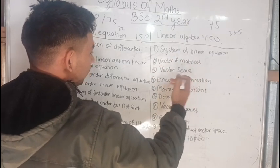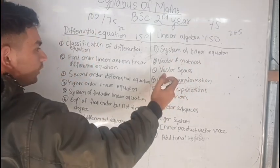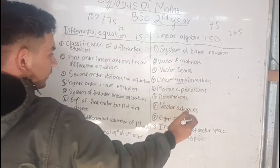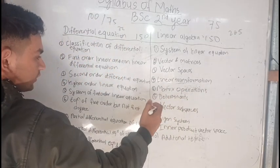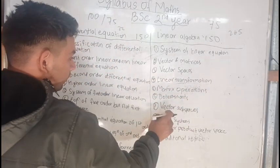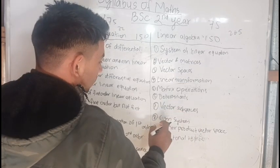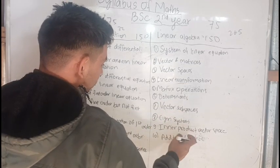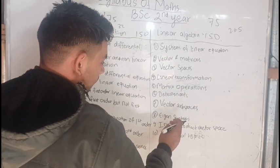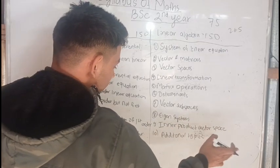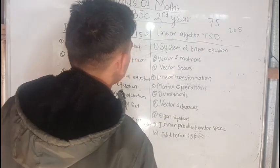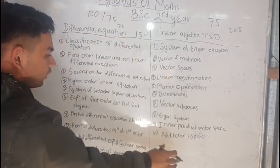For linear algebra: fourth is linear algebra, fifth is matrix operations, sixth is determinants, seventh is vector space, eighth is eigen systems, ninth is inner product vector space, and tenth is additional topics.